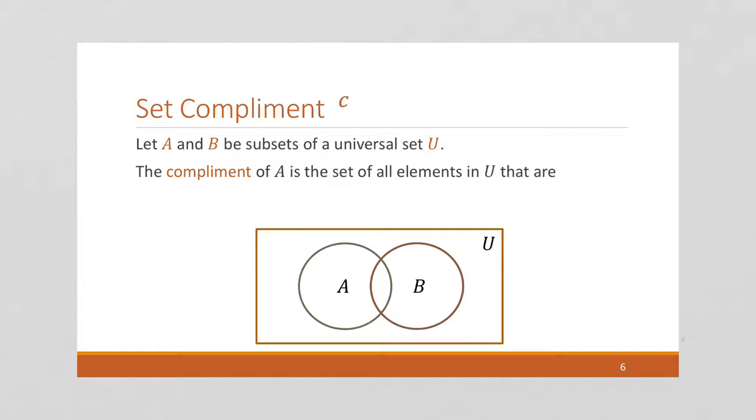Final operator we're going to look at is set complement and it is done as a subscript of the set. So for example, we'd say A complement or B complement. The complement of A is the set of all elements in the universe that are not in A. So we say A complement equals the set of all elements in the universe such that x is not an element of A.